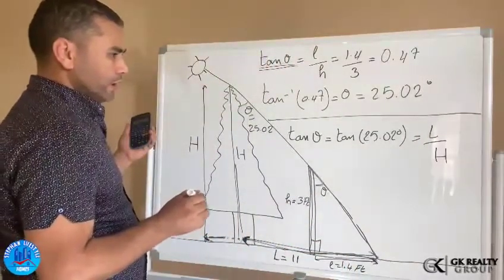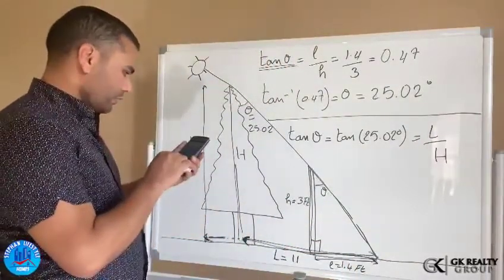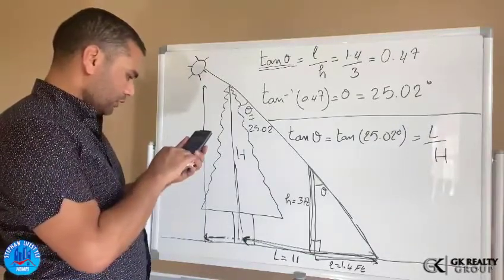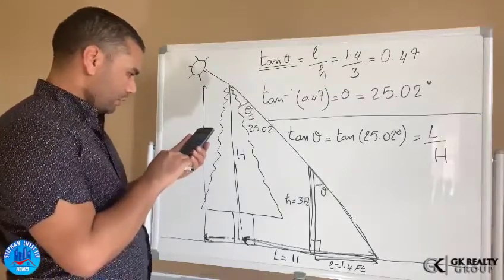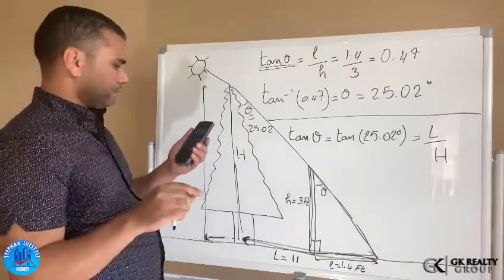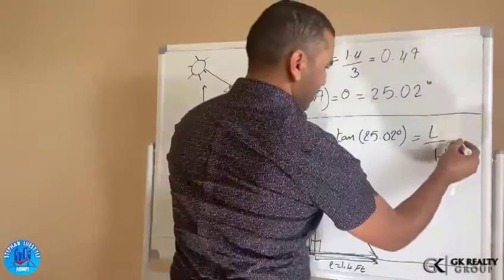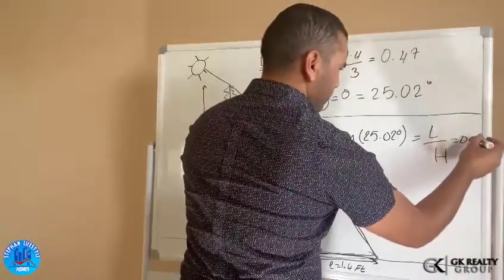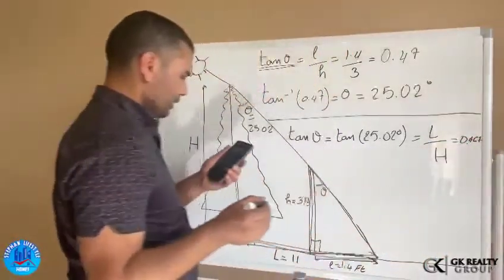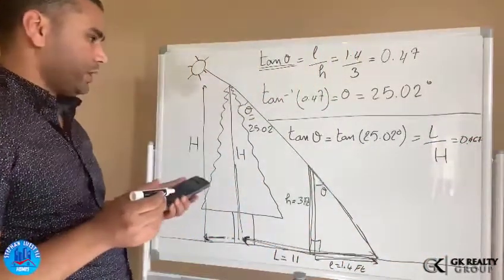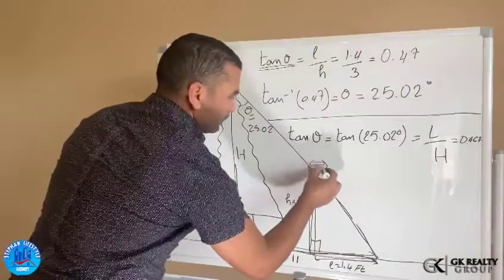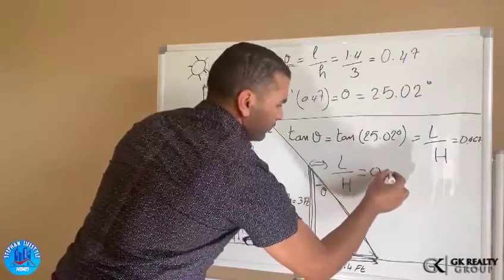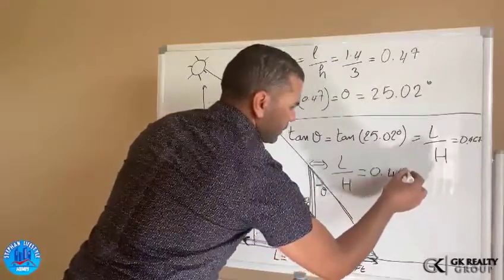So what do we have here? Tangent theta, which is equal to tangent 25.02 degrees, is equal to big L over big H. And what is the tangent? Tangent gives us 0.467, same thing as we have it because we already did it. Therefore, we have L over H equals 0.467.